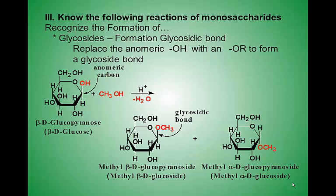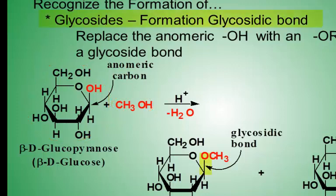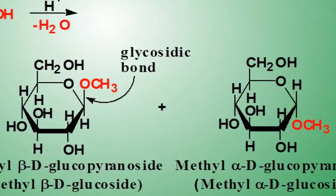An important reaction between a monocyclic saccharide and other molecules is the formation of a glycosidic bond. The anomeric carbon in a cyclic monosaccharide plays an active role in the formation of a glycosidic bond. A glycosidic bond is a bond between the anomeric carbon and the oxygen of another molecule.